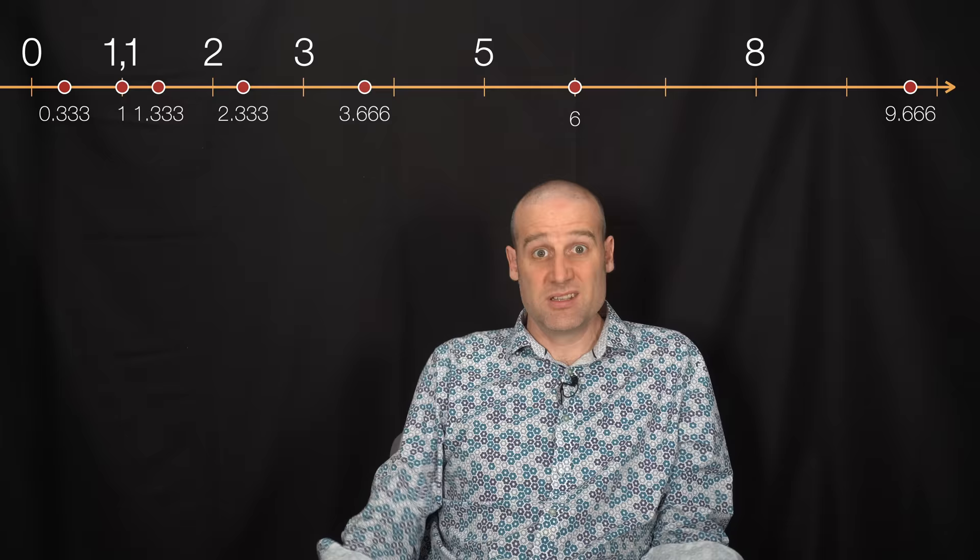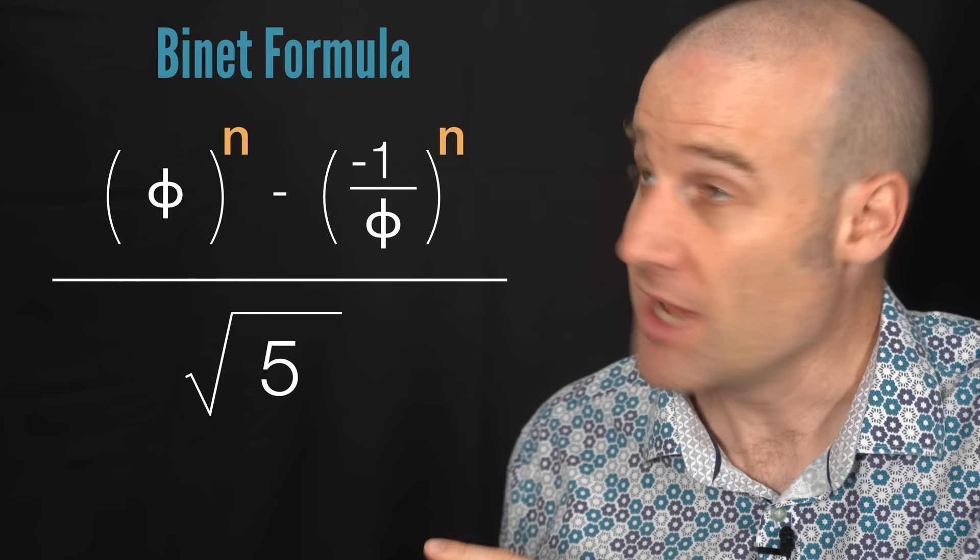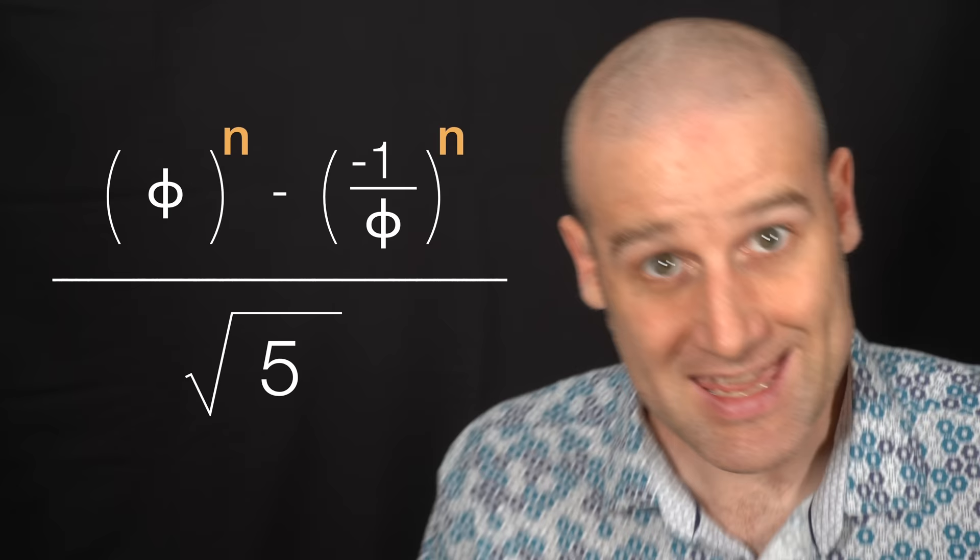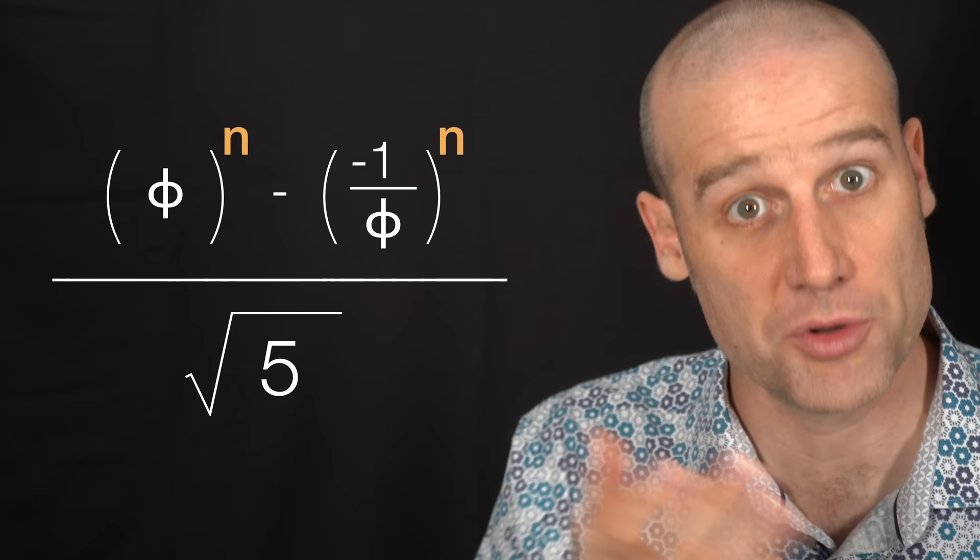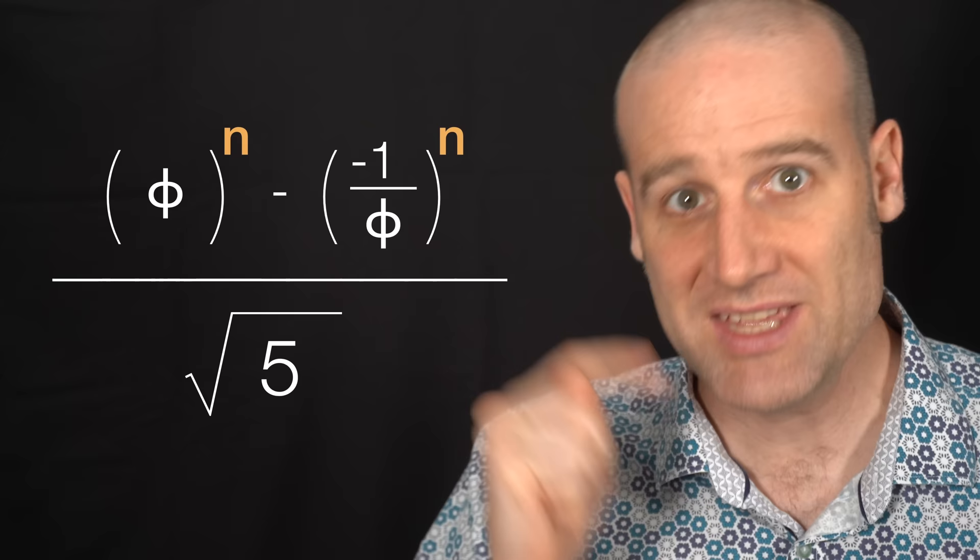But then I remembered something else. I had remembered the Binet formula. Now, I've talked a lot in other videos about how you can generate things like the Fibonacci and Lucas sequences. I'll link to them all below. But I have not mentioned the Binet formula. And it does look very, very Fibonacci-y. It's got the golden ratio to the power of n. It's got the negative inverse to the golden ratio, also the power of n. And of course, you're dividing it by the square root of 5. Big fan. Links to other videos below.